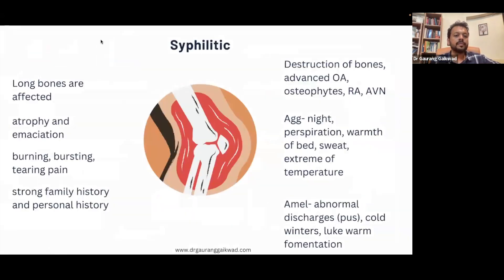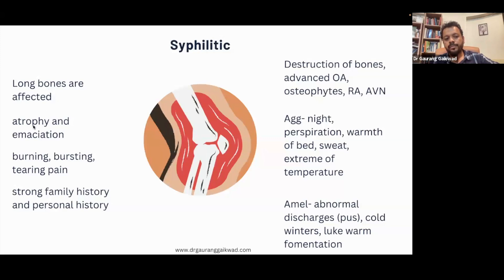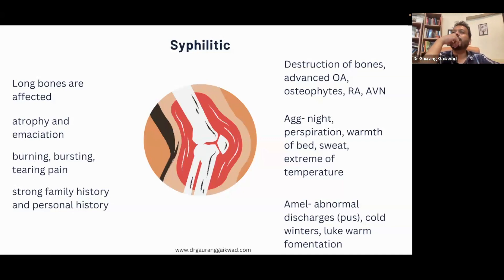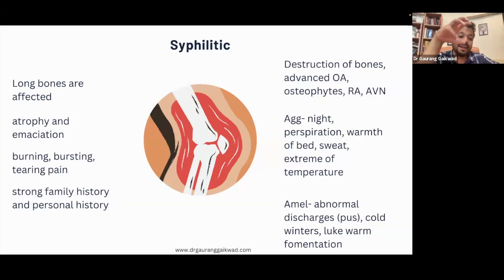The next miasm is, of course, the Syphilitic miasm — everything about destruction, ulcers, gangrene. The long bones and the spine are more affected. Atrophy and emaciation. I give a lot of importance to family history and personal history. The person in Syphilitic miasm has had syphilitic patterns of diseases. Even in the family we will see someone having paralysis or sudden heart attack — this is very typical Syphilitic miasm. Could also be a history of a lot of alcoholism in the family.